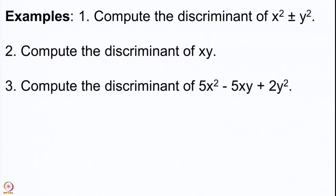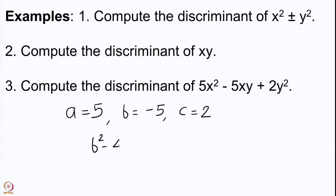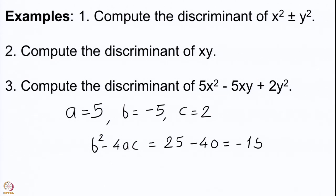One more example: compute the discriminant of 5x² - 5xy + 2y². This is a slightly more complicated example. We get b² - 4ac = 25 - 4·(5)·(2) = 25 - 40, so the discriminant is -15. To recap: the discriminant of x² ± y² was ∓4, the discriminant of xy was 1, and the discriminant of 5x² - 5xy + 2y² is -15.